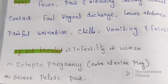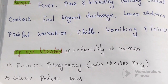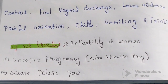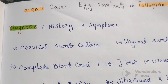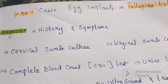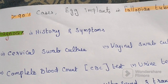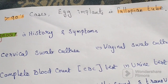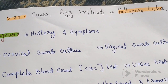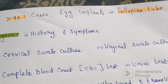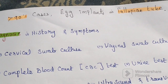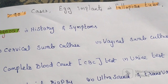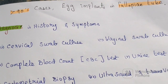Ectopic pregnancy, also called extra-uterine pregnancy, is when a fertilized egg grows outside a woman's uterus. It also causes severe pelvic pain. In more than 90% of cases, the egg implants in the fallopian tube. It can cause life-threatening bleeding and needs medical care right away.